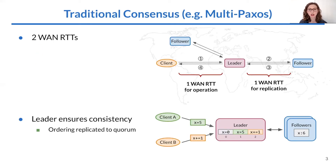Traditional approaches to consensus like RAFT or multipaxos are slow when used in a wide area network, taking two WAN round trip times to complete an operation. The first RTT is between the client and the stable leader to communicate the operation and its results. The second is for the leader to durably replicate the operation so that it can survive failures. An important function of the leader is to ensure that all replicas end up in a consistent state by ordering non-commutative operations before they're replicated.